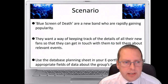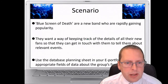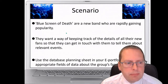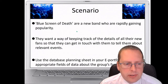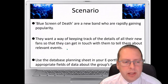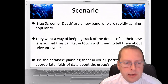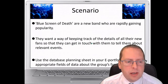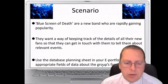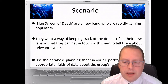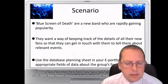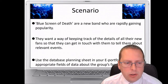Over the next few weeks, we're going to be creating a relational database for a new band who are rapidly gaining popularity. The name of the band is Blue Screen of Death. They want a way of keeping information in a database about their fans, so they can get in touch with them about upcoming gigs, new albums being released, and information about the band. You can plan your database in your e-portfolio, deciding on what appropriate fields of data about the fans need to be recorded.